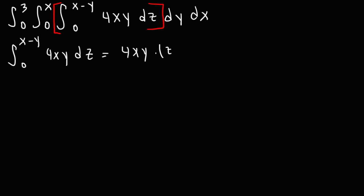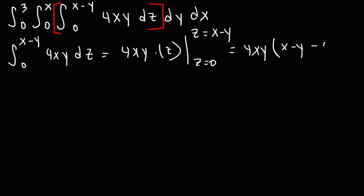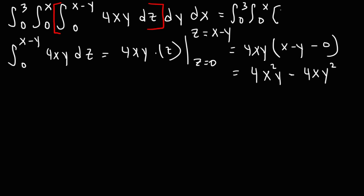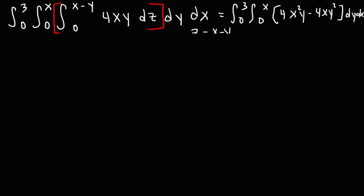Since 4xy is a constant, we rewrite it and then add a z to it, evaluated from z equals 0 to z equals x minus y. That's going to be 4xy times — replacing z with x minus y, then minus 0. Distributing the 4xy gives us 4x squared y minus 4xy squared. So right now we have the integral from 0 to 3, and then the integral from 0 to x, of 4x squared y minus 4xy squared, and then dy dx.